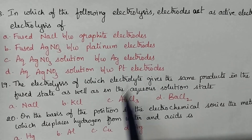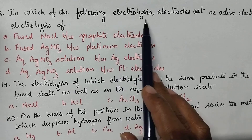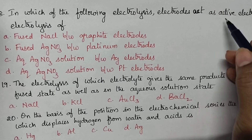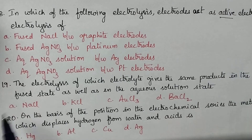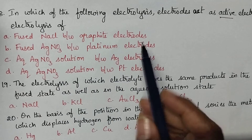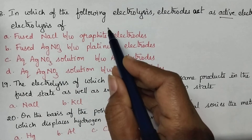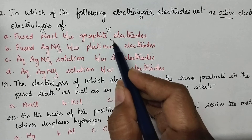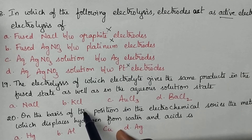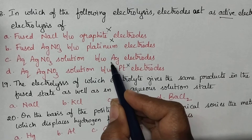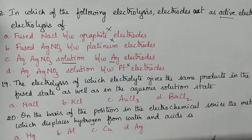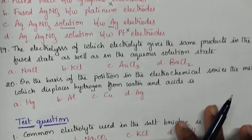In which of the following electrolysis do the electrodes act as active electrodes? Active electrodes are those made of materials other than graphite and platinum. Option C is the right answer.